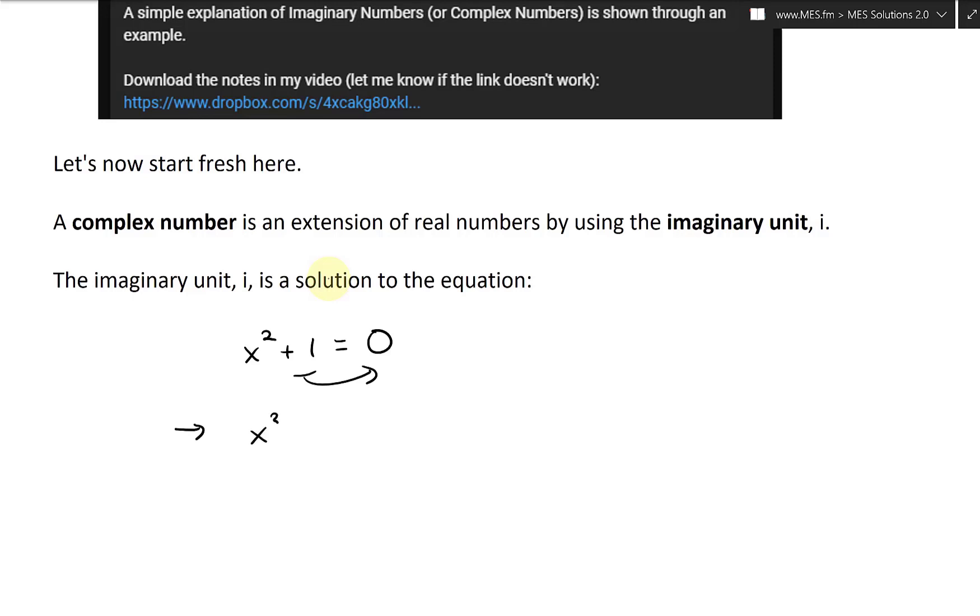x² = -1. Because you can't use a real number, we'll just say the number is i, so i² = -1. Or you could square root both sides and we're going to get i = ±√-1.